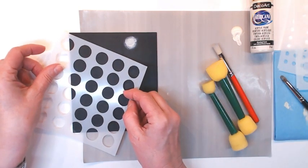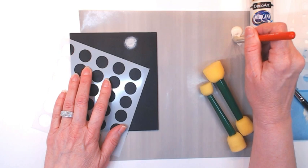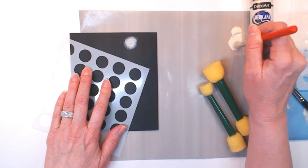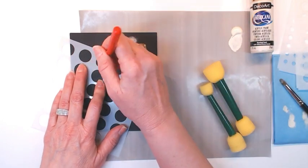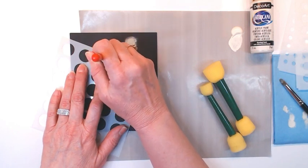So now I'm going to do it with a stencil. Again, load your brush. I'm going to offload some of that off of the tip there, and then you're just going to do your stencil.